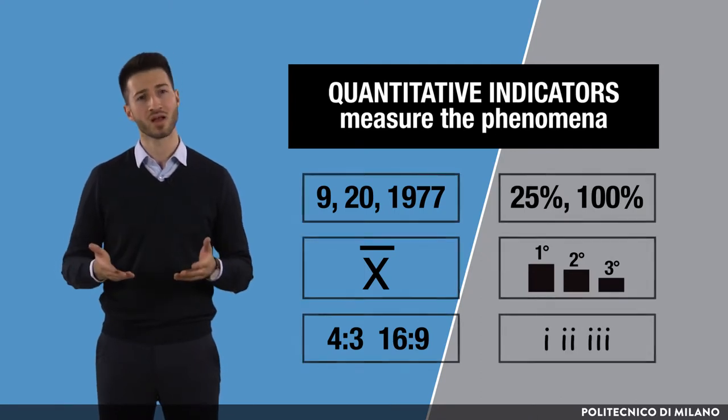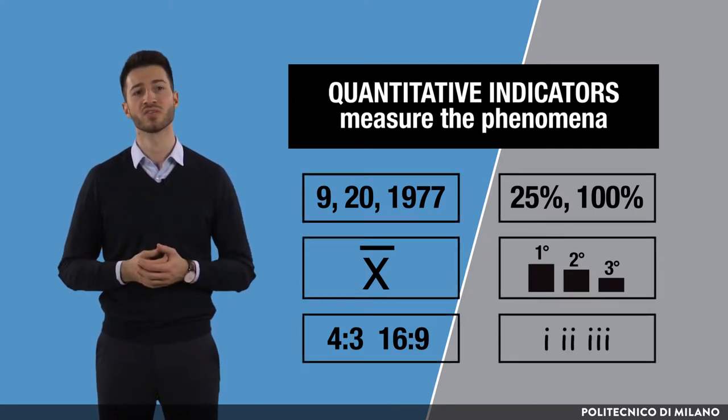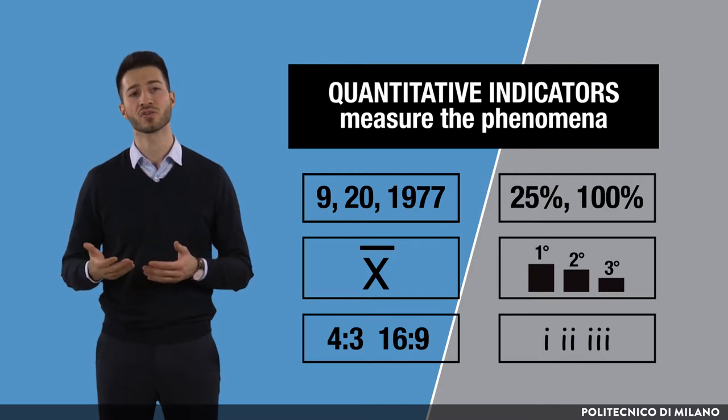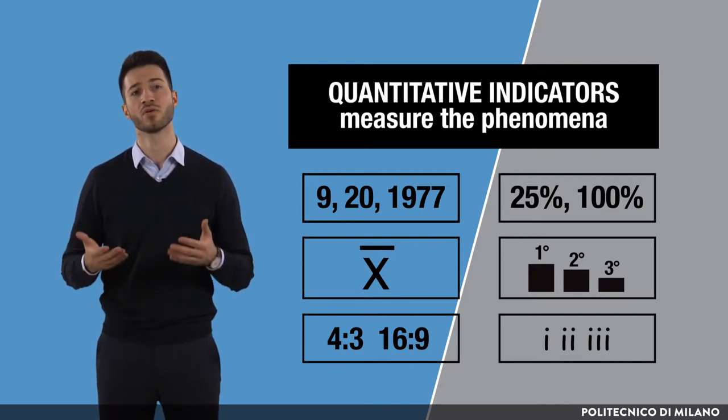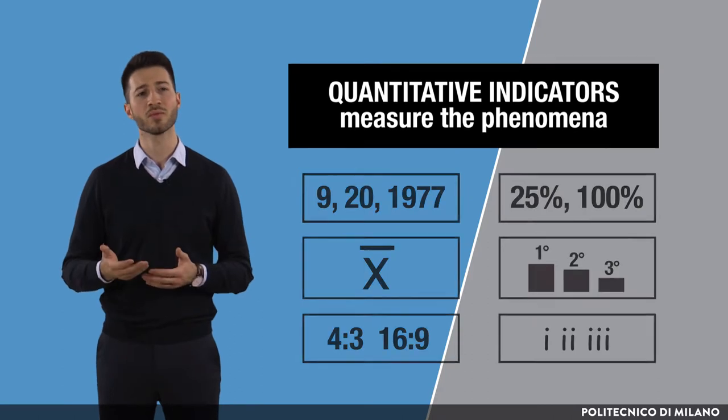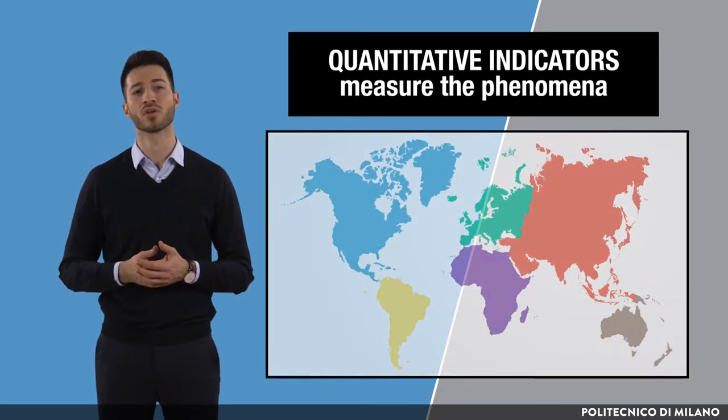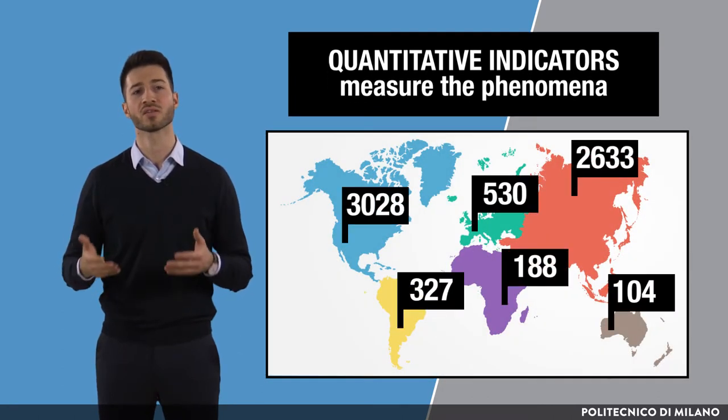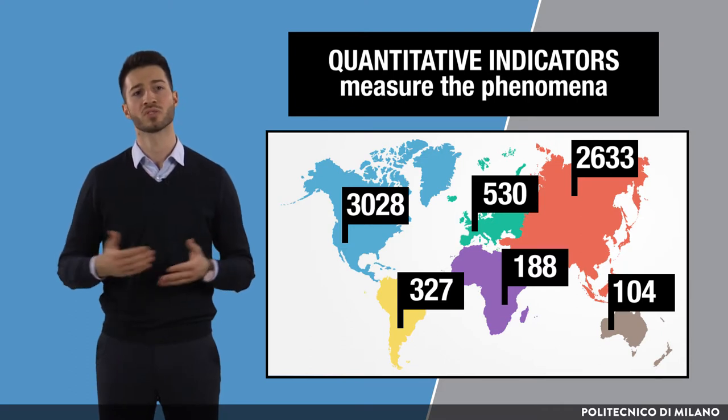Some of them, like numbers, are absolute measures and give a scale of the results, while the others, like percentages, are relative measures and give a reach of the result. For example, we can relatively easily count the number of startups that have been financed or the number of jobs that have been created by startups.